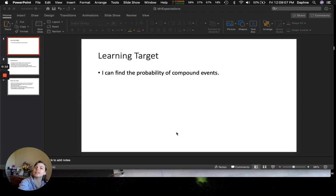learning target. I can find the probability of compound events. So we already learned about interval probability. Now we're going to do compound events and what that fancy word compound means and how we apply that to probability.